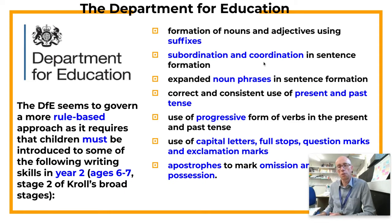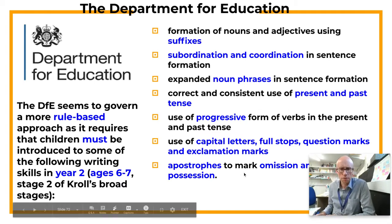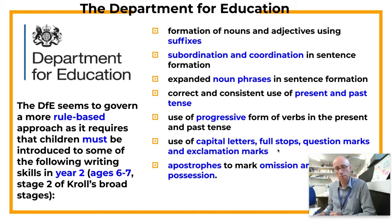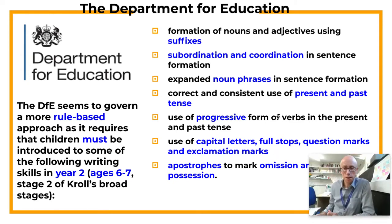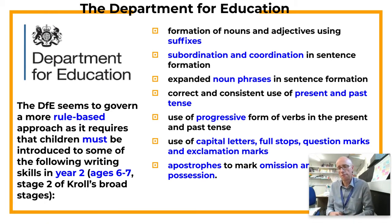We also have things like relative clauses, expanded noun phrases, the ability to grapple with verb tenses, to be using the progressive rather than the simple aspect of the verb — progressive aspect being the -ing, continuous form of the verb. And then of course, being able to use in a controlled, accurate way the basics of punctuation, such as capital letters for proper nouns and the beginnings of sentences, full stops at the ends of sentences, question marks and exclamation marks.